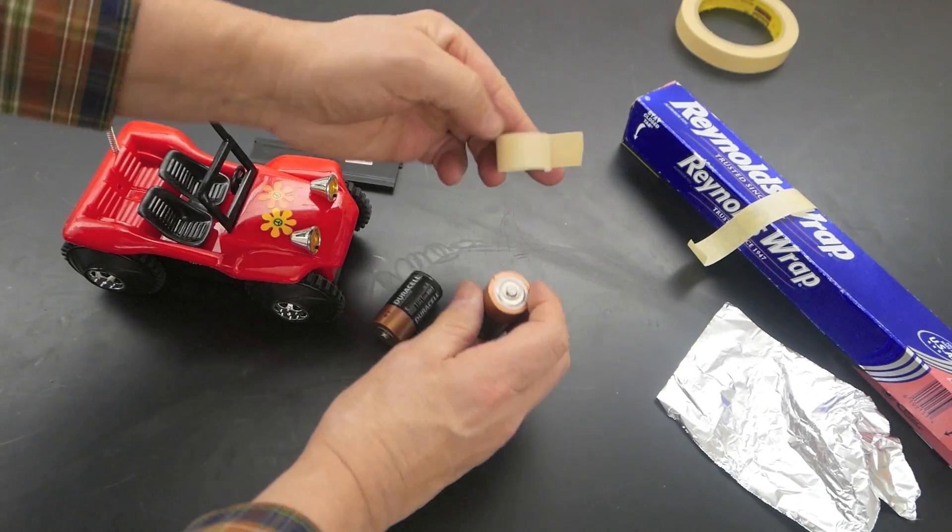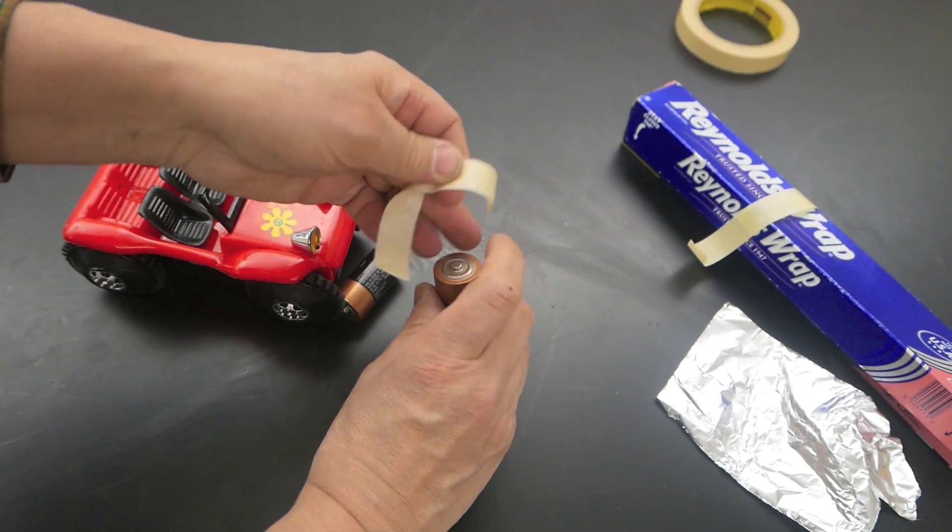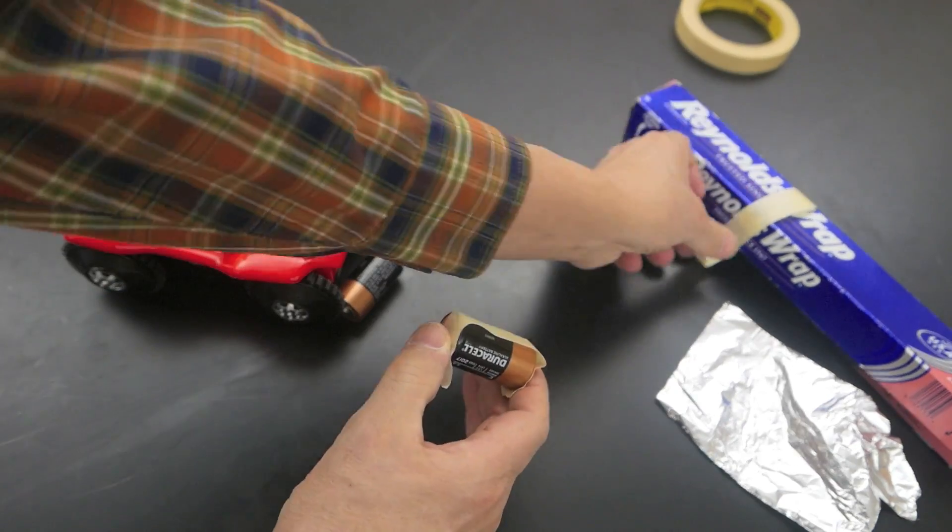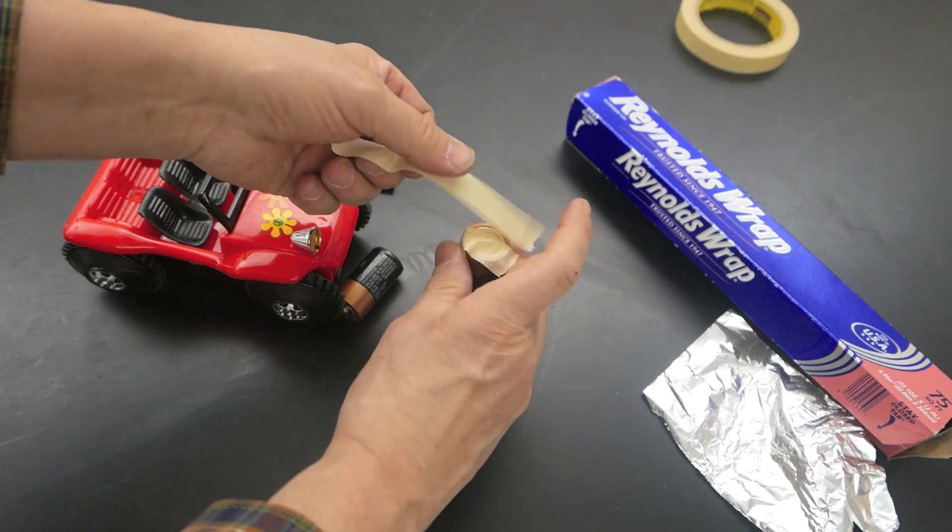I can reduce the voltage down to 1.5 volts by covering up one of the batteries with some masking tape. I can completely cover both ends of it. There we go.